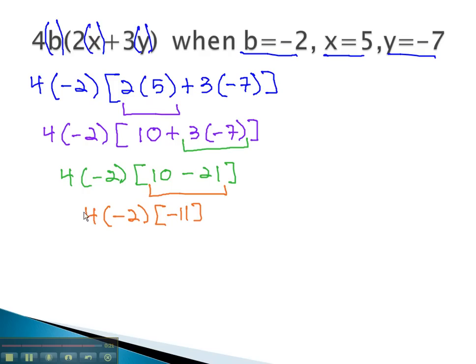We can finish by multiplying from left to right. 4 times negative 2 is negative 8, times negative 11, which will give us positive 88.